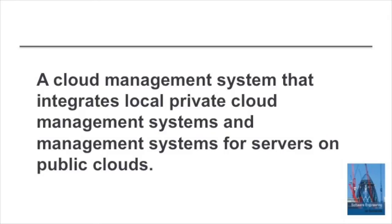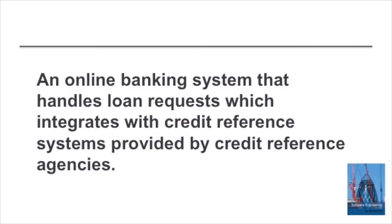Think about some examples of systems of systems. One example would be a cloud management system that manages private clouds and a number of public clouds. What we have here is one system — the cloud management system — interacting with the local cloud management facilities and the cloud management systems provided by other cloud providers such as Amazon, Google, Microsoft, IBM and so on.